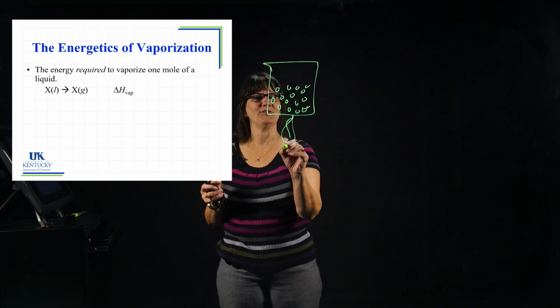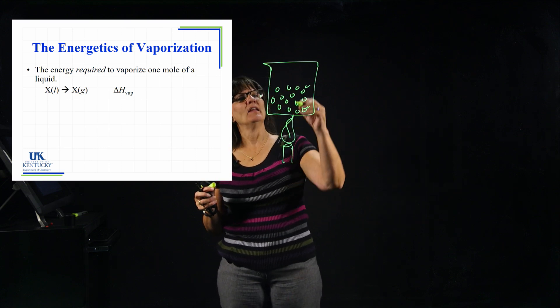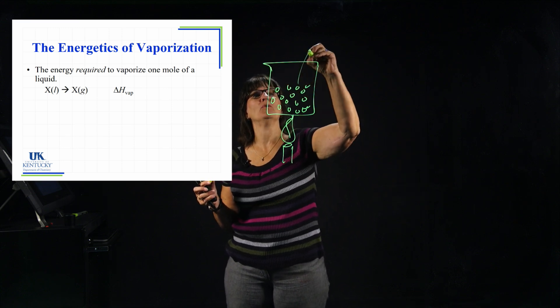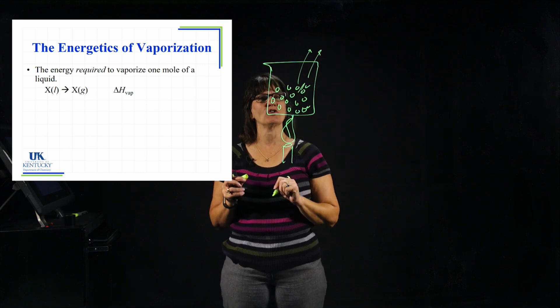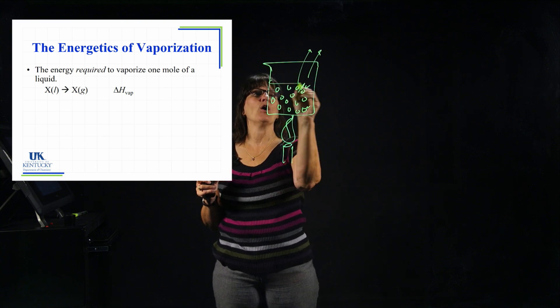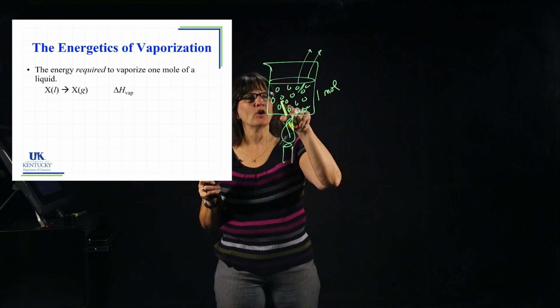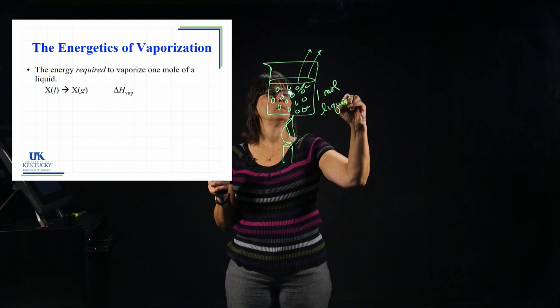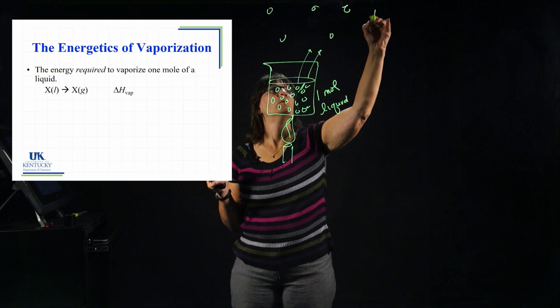And we're going to put a heat source underneath it. We're going to add and warm up this thing, and these guys are going to evaporate. They're going to be able to go into the gas phase. The only way they can do that is to break those attractions. Let's say I have a whole mole of them, one mole. And I want to convert this whole mole of a liquid to a whole mole of a gas.